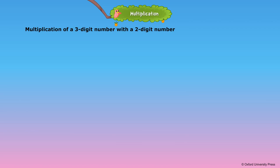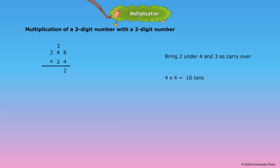Multiplication of a three-digit number with a two-digit number. Let us multiply 248 by 24. First, multiply eight ones by 4 to get 32. 32 equals three tens and two ones — three tens is carried over. Then multiply two hundreds by 4 to get eight hundreds. Eight hundreds plus one hundred carried over equals nine hundreds. We have successfully multiplied 248 by 4 to get 992.